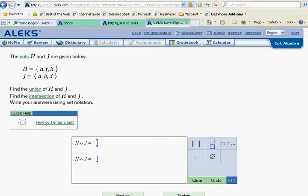Okay, in this portion of ALEKS College Algebra, we will be looking at union and intersection of finite sets. And so it says the sets H and J are given below, and then they give those in set notation. They want us to find the union and the intersection. We want to write the answers in set notation.